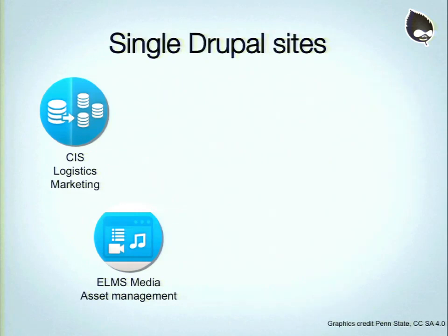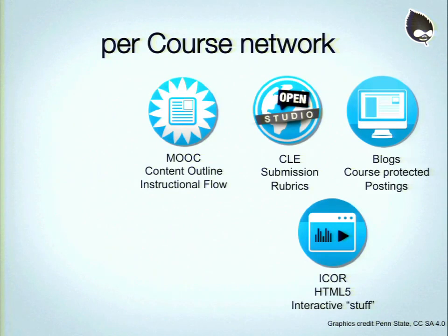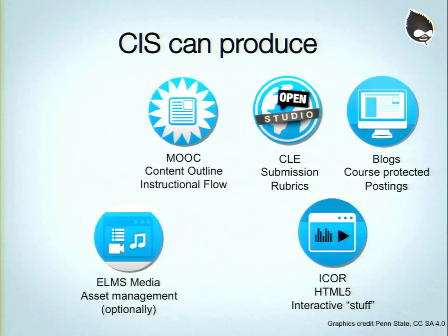In our network, we've got a single Drupal site at the CIS — the hub knitting this experience together — and at our asset management system. Per course, we're talking about multiple Drupal sites being produced for each of these systems. The CIS is capable of producing any of these things using a jobs file. If you're familiar with Jenkins, it doesn't use Jenkins but it's the same type of idea — you kick out a job, it runs a bunch of Drush commands, and out the other side you get a Drupal site.